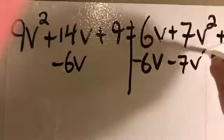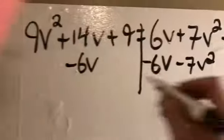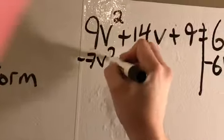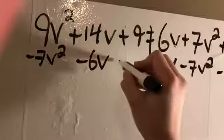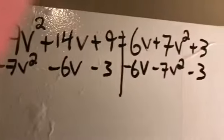And then I'll subtract that 7v². Since that's v², I will line that up with the v² over here. Then minus 3, regular number, I'll line it up with the regular number.